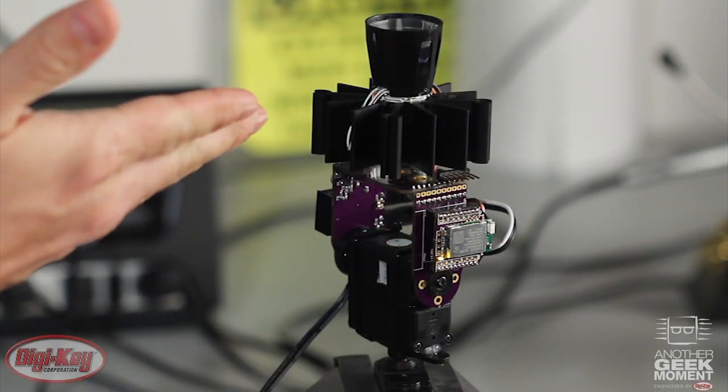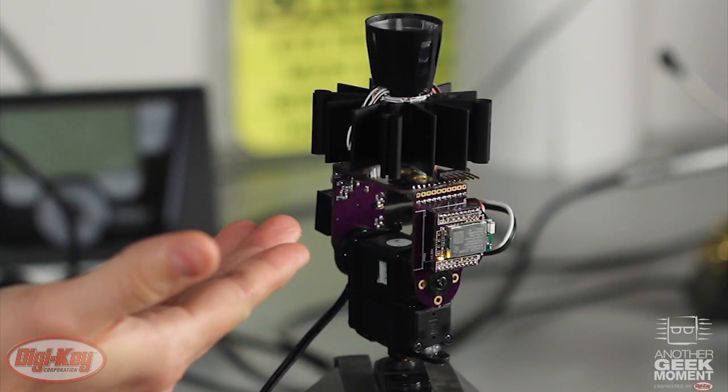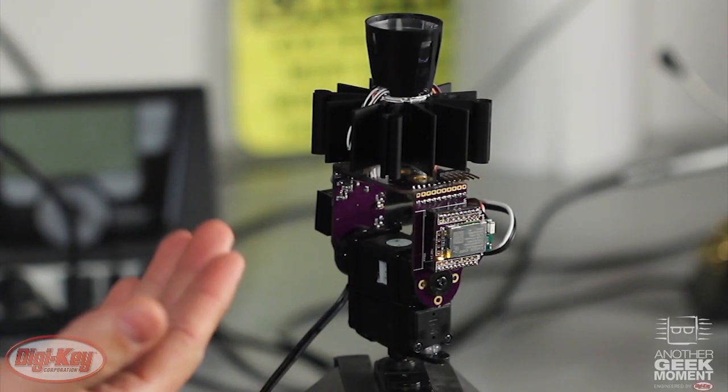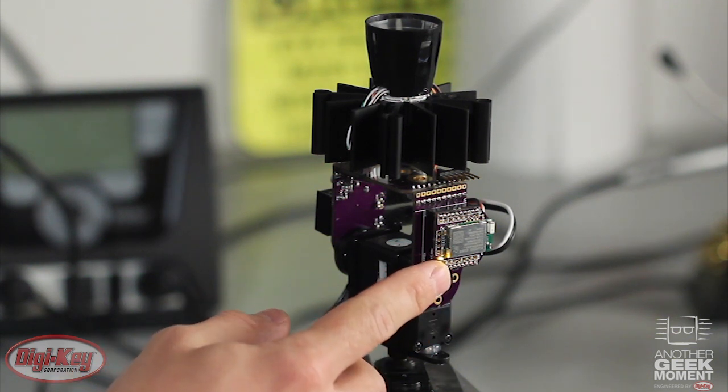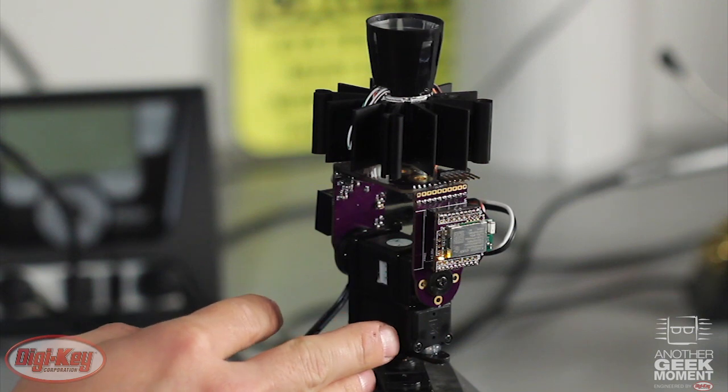This is a red green blue high-power LED. There's a circuit board underneath with a microcontroller, four constant current LED drivers, the Bluetooth module and the breakout board and two metal geared servos.